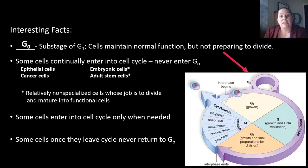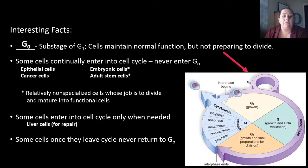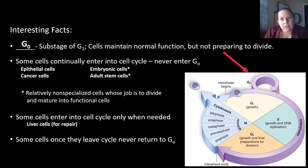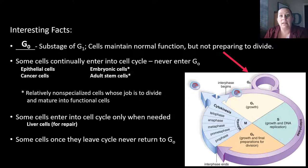Embryonic cells and stem cells are relatively non-specialized; their whole job is just to divide so some of those others can mature and become specialized cells. Some cells will enter the cell cycle only when needed, going into the G0 phase until needed. The best example for humans is liver cells — the liver is the one organ where you can do a live transplant and it will grow back. They can actually cut your liver in half, give half to somebody else, and within a year your liver will be grown back to normal size. It's the only organ in the human body that can do this.